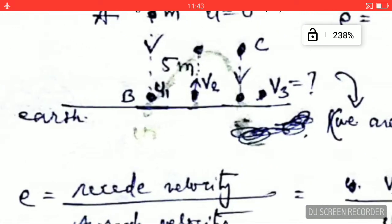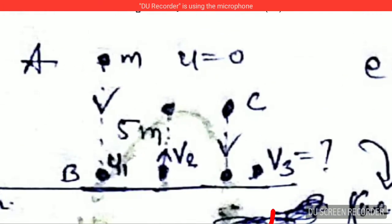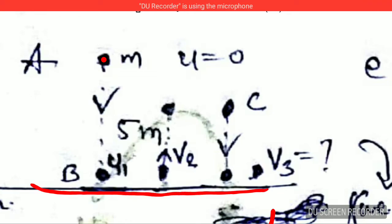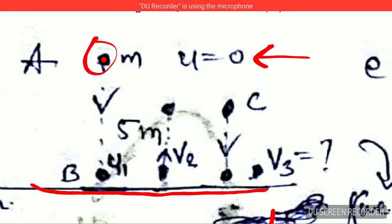I have tried to explain the question with the help of a diagram here. So initially the mass was here — this is the surface of the earth — and it falls to the ground. It started from rest, so the initial velocity is 0, and it is 5 meters above the ground. Before hitting the ground, it comes to point B.